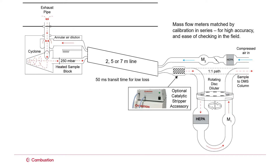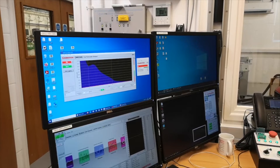Mass flow meters are matched in series for dependable accuracy, and the minimum dilution even for direct sampling is just a factor of five for the best sensitivity.